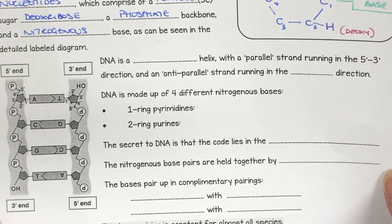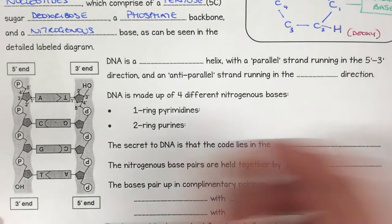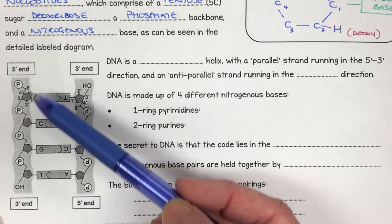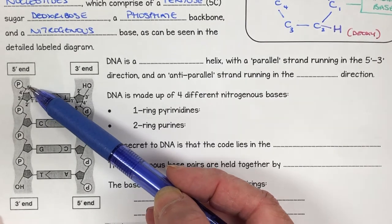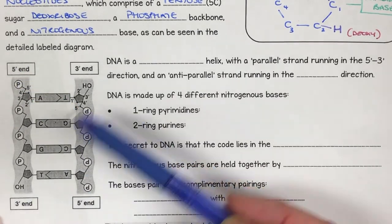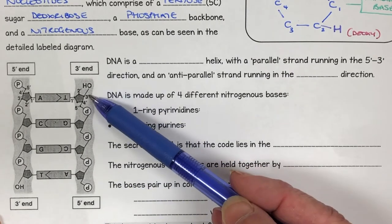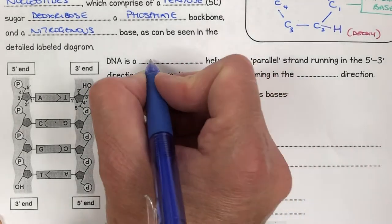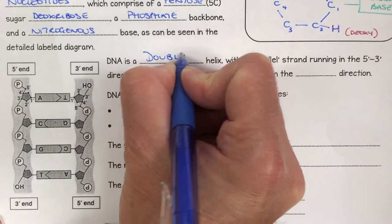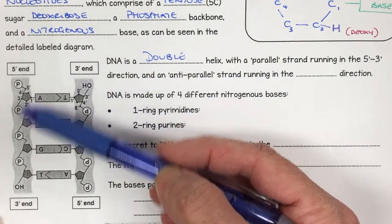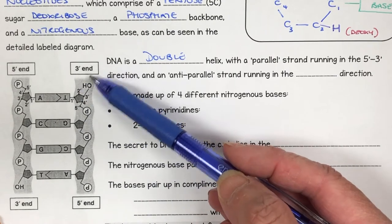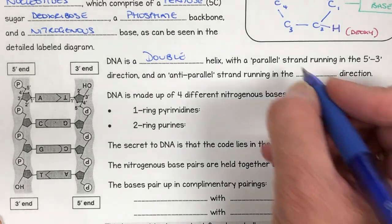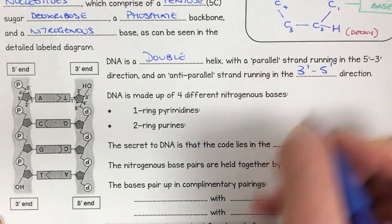Here is our DNA. The five prime and three prime refers to the carbon at the top being the five carbon, so we say it's five prime to three prime, because the anti-parallel strand runs three prime with a three carbon at the top to five prime. DNA is a double helix, as we know, and it has a parallel strand running in the five prime to three prime direction, and an anti-parallel strand running in the three prime to five prime direction.